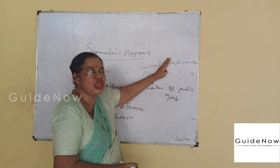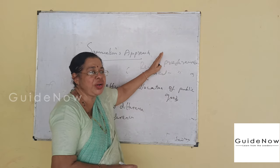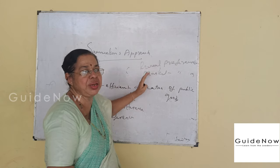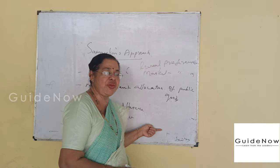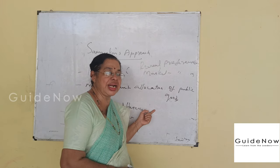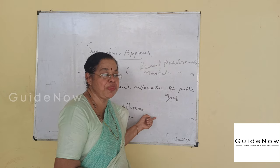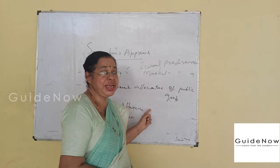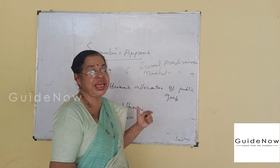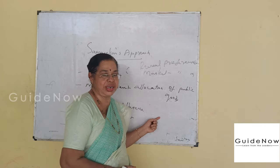But preference revelation and market mechanism are not possible in the case of public goods. To clarify this, Samuelson applied microeconomic principles. However, he was against the general equilibrium analysis explained by Leon Walras.